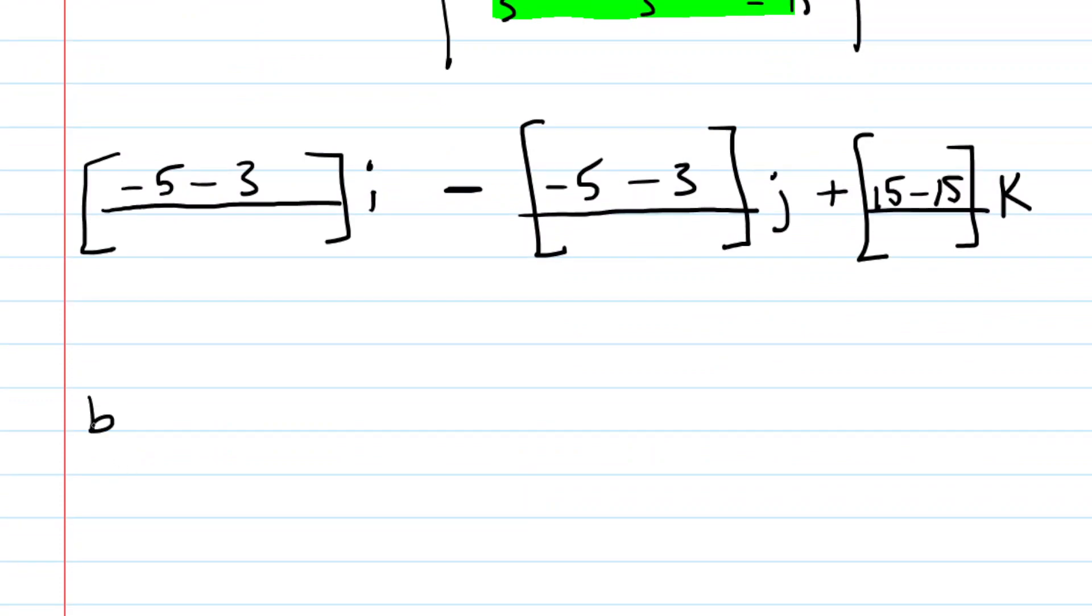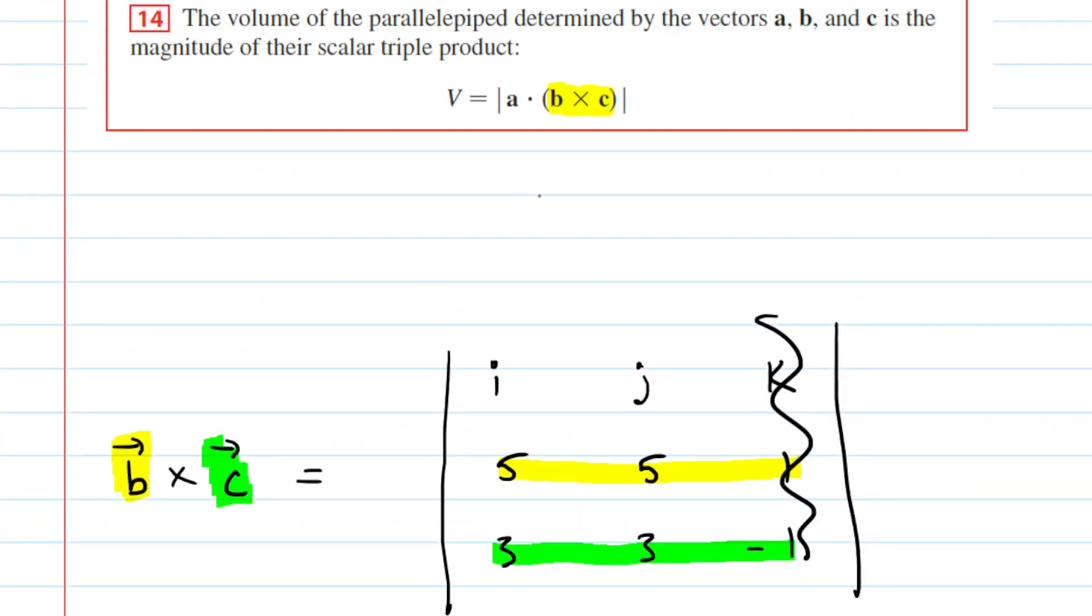So the cross product, we can summarize here. B cross C will equal negative 5 minus 3 is negative 8 i, negative 5 minus 3 is negative 8, but then there's that extra negative there, so that'll be plus 8j and then plus 0k. My personal preference when doing the cross product is to write the answer in this form using these triangular brackets. So we have negative 8, 8, and 0. So that's great. That's the cross product. But if you go back and look at the formula for the volume of this figure, the next thing we would have to do is take vector A and dot it with the cross product.